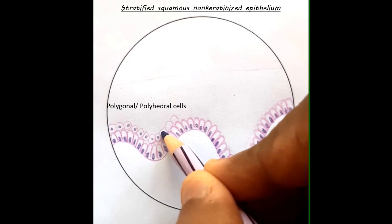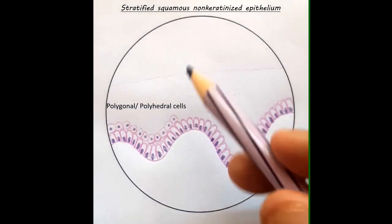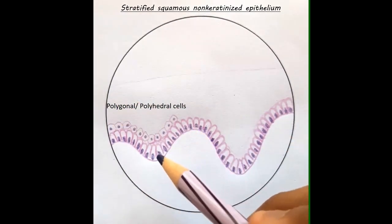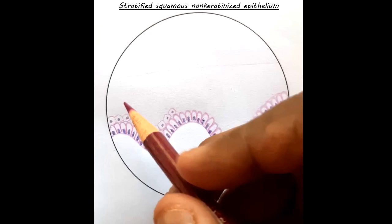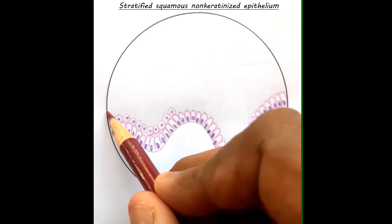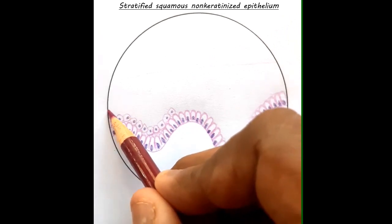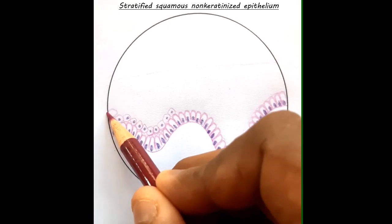Using the pencil, denoting the hematoxylin stain, these nuclei are drawn. So in this part of the diagram, the left one-third, we have drawn the polygonal cells. Now the next layer, the next layer of cells will be again more or less a polygonal or polyhedral in shape.